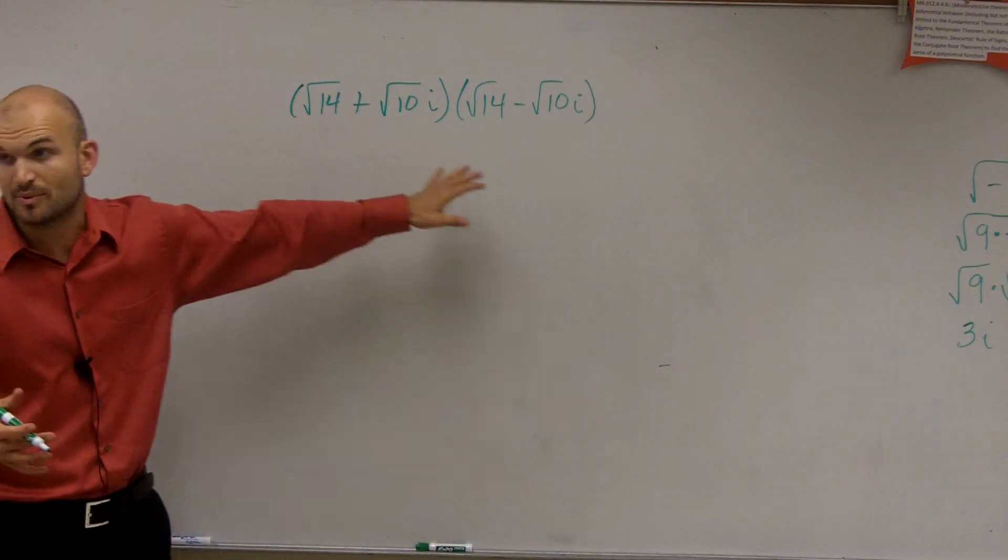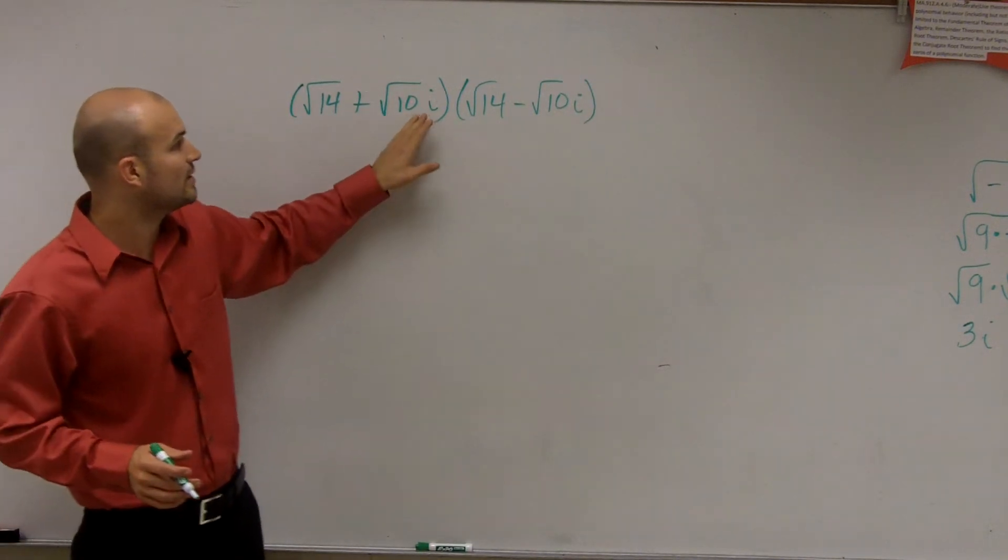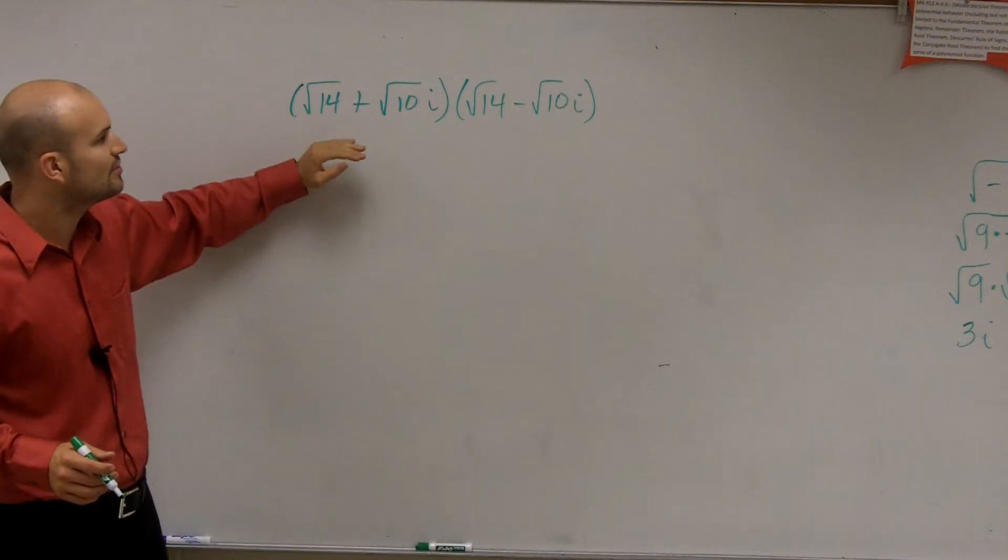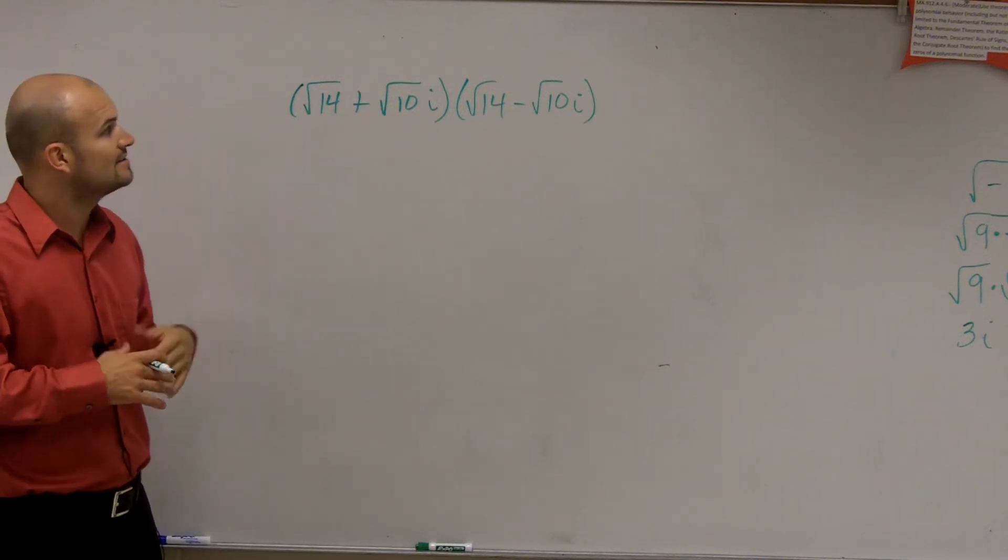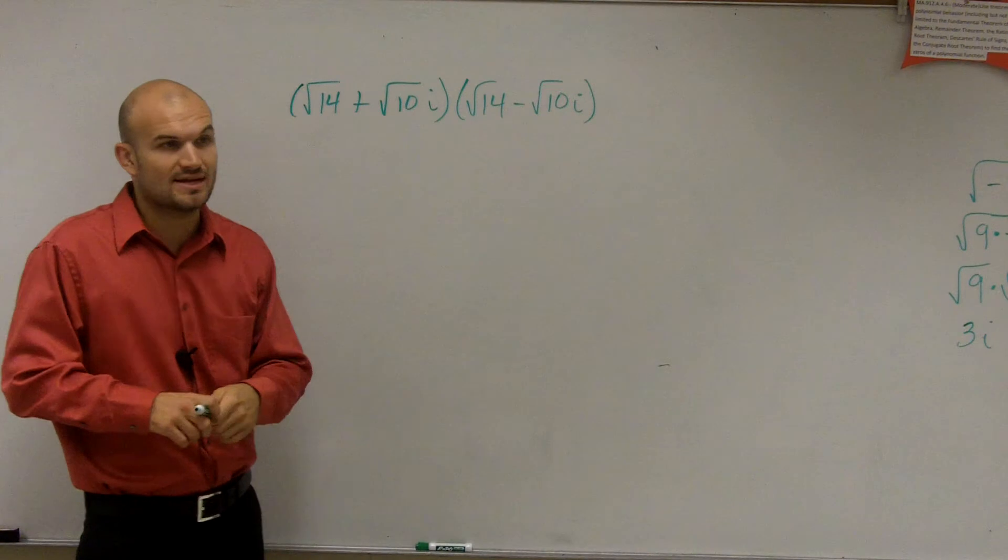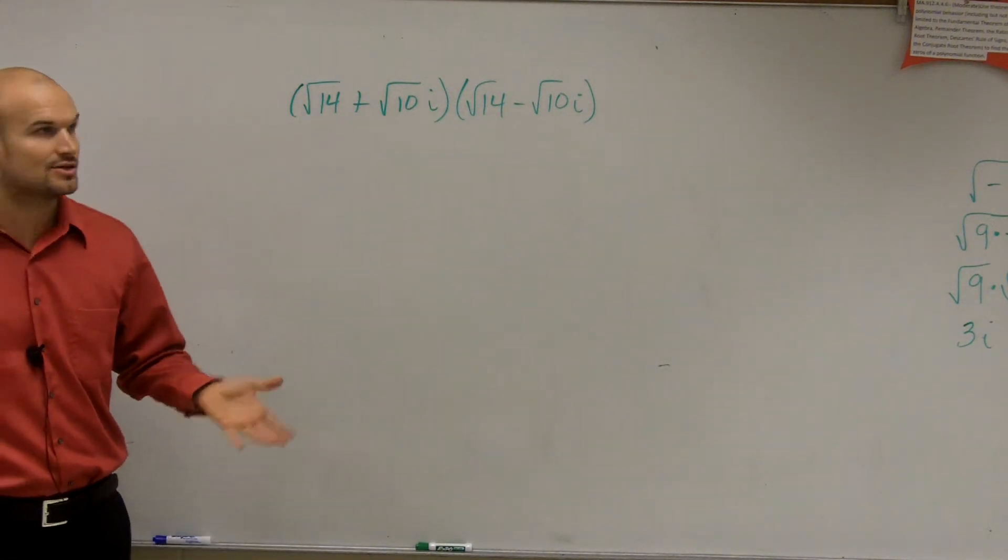Alright, so what we want to do is we need to multiply these two, right? And remember, what we have is the square root of 14 plus the square root of 10i times the square root of 14 minus the square root of 10i. The best thing I can tell you guys to do, remember, I mean everybody should know foil.